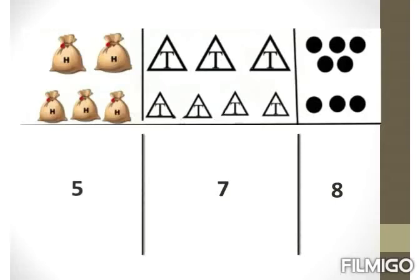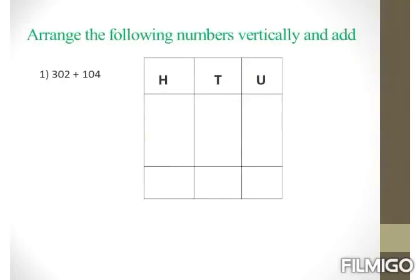So our answer is 578. Now, arrange the following numbers vertically and add. Our first sum is 302 plus 104. You will be solving these sums along with me, so keep your pencil and notebook ready.